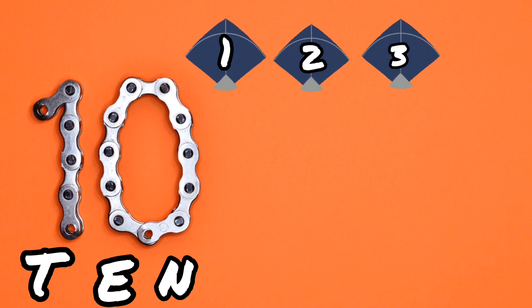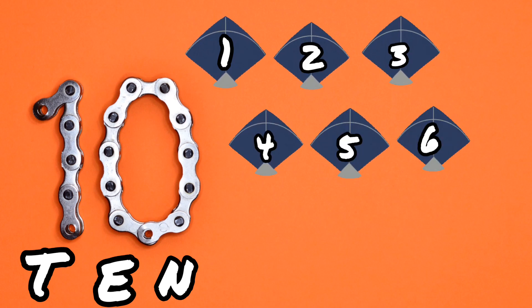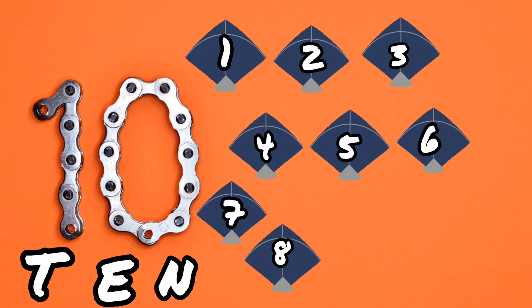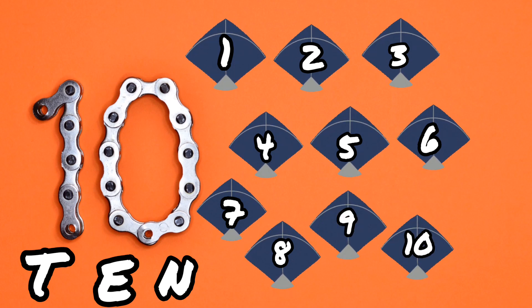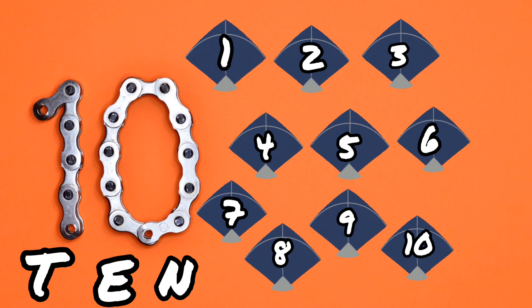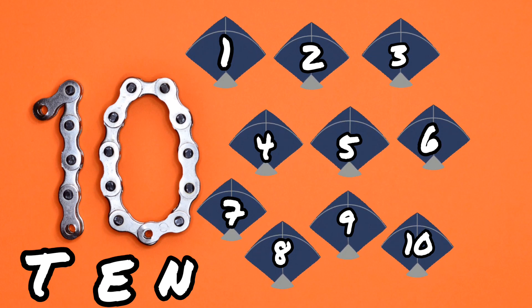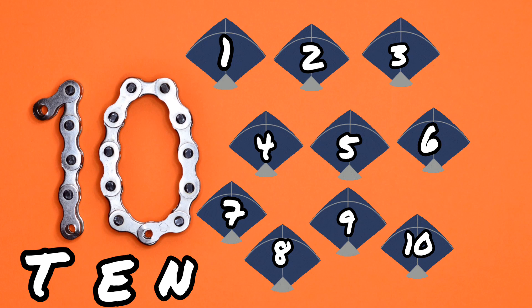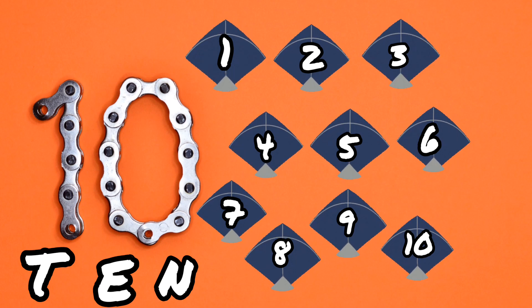Ten. This is number 10. T-E-N. Ten. So it's time to count. Ten. So how many shapes are there? Ten. And what shapes are these? A rhombus. Right. There are ten rhombus.